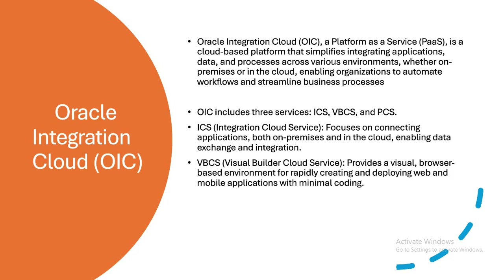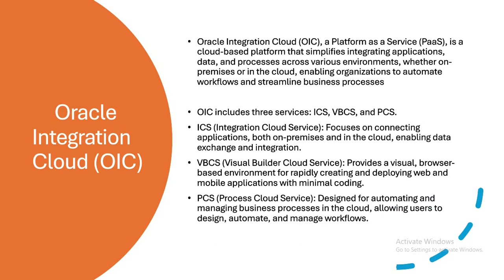VBCS, which is Visual Builder Cloud Service, provides a visual browser-based environment for rapidly creating and deploying web and mobile applications with minimal coding. PCS, which is Process Cloud Service, is designed for automating and managing business processes in the cloud, allowing users to design, automate, and manage workflows. OIC runs on top of OCI, that is Oracle Cloud Infrastructure.